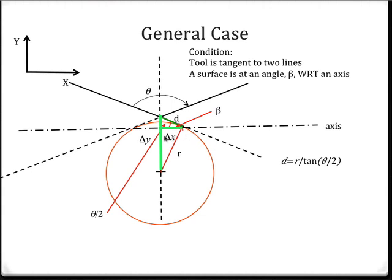Now what we really want to find is our delta y and delta x offsets. As you can see here, we have to create another triangle in order to find delta x. Delta y will just be the hypotenuse of our initial triangle from before. Given these two triangles and the fact that we know beta and theta over 2, we can calculate our delta x as d times the cosine of beta. And then delta y — the hypotenuse — is d divided by cosine of theta over 2. Now that we know delta y and delta x and we know this corner point, we can determine the location of the tool.